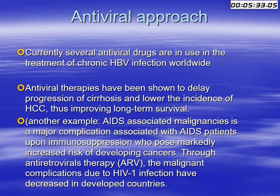Regarding the antiviral approach, our best example is drug therapy for chronic hepatitis B. Antiviral therapies have been shown to delay the progression of cirrhosis and lower the incidence of hepatocellular carcinoma, thus improving long-term survival. Another example is AIDS-associated malignancy, a major complication in AIDS patients with immunosuppression, who have a markedly increased risk of developing cancers. Through antiretroviral therapy, the malignant complications due to HIV-1 infection have decreased in developed countries.